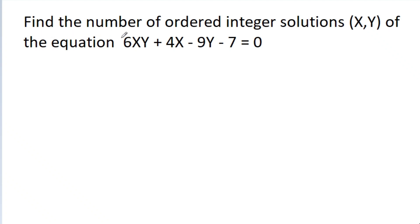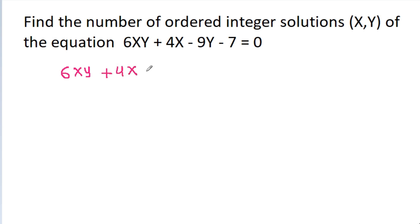We have to find the number of ordered integer solutions (x, y) of the equation 6xy + 4x - 9y - 7 = 0. So we have 6xy - 4x - 9y - 7 = 0.